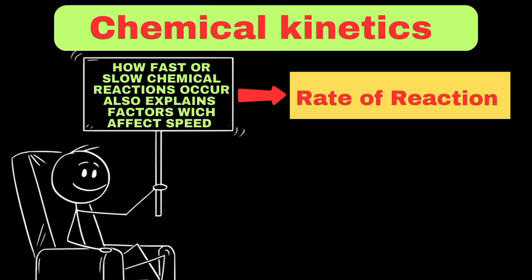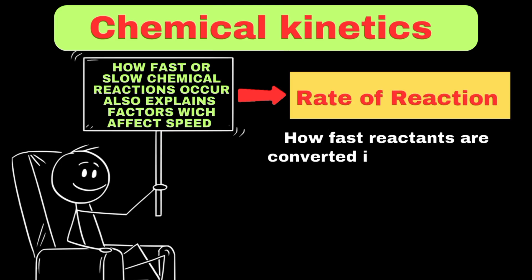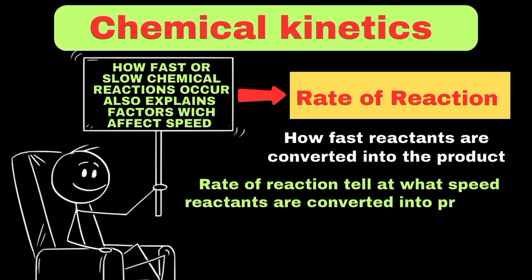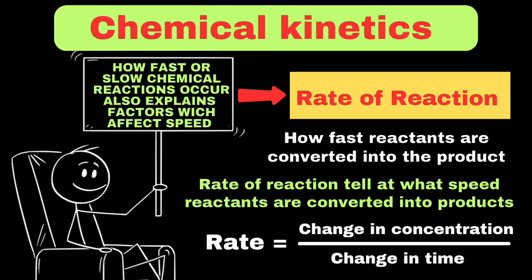The rate of a reaction tells us how fast reactants are converted into products, or simply, at what speed the reactants are changing into products. The rate of a chemical reaction can be measured as the change in concentration of reactants or products divided by the time taken for that change.